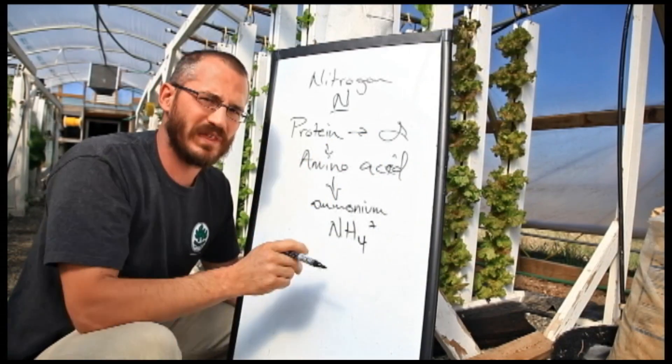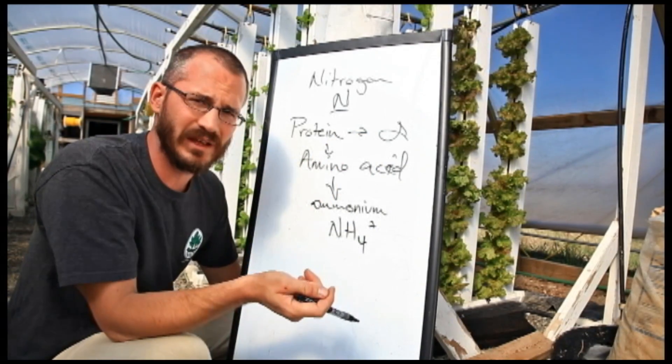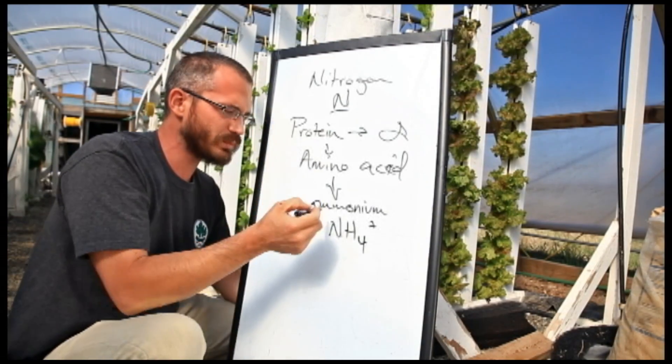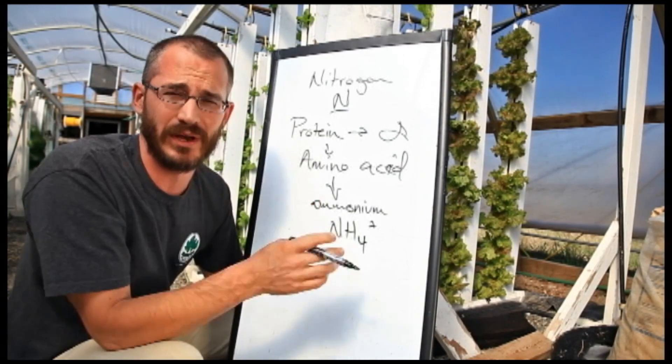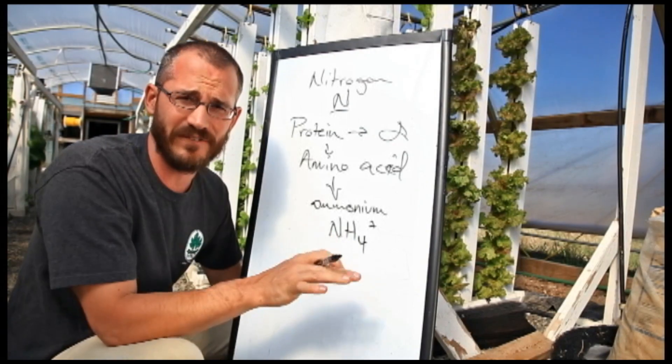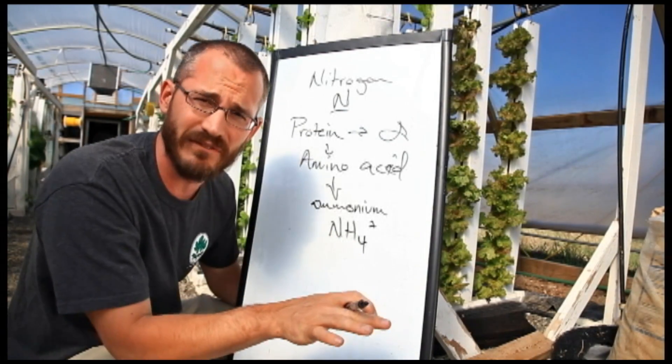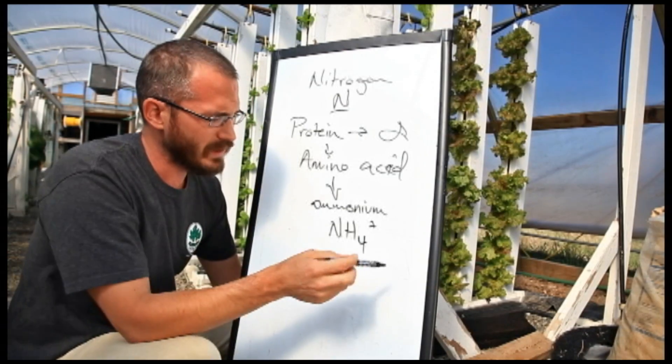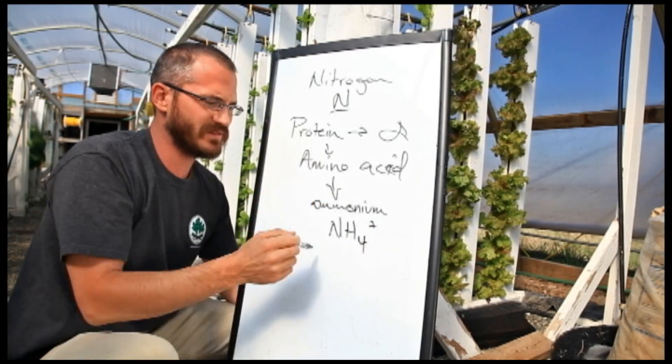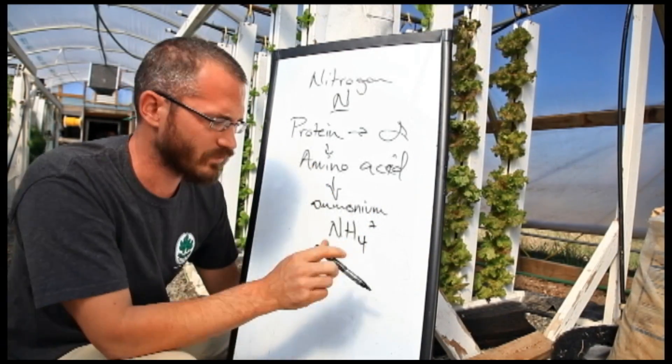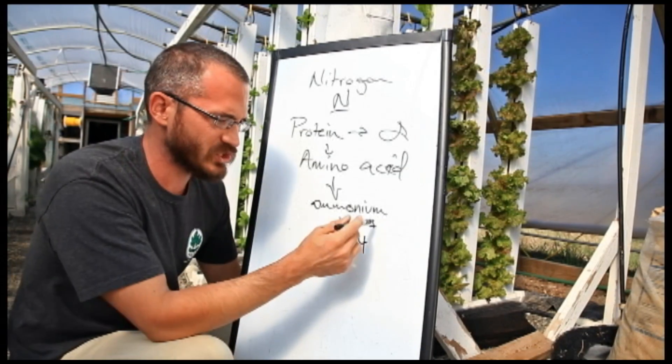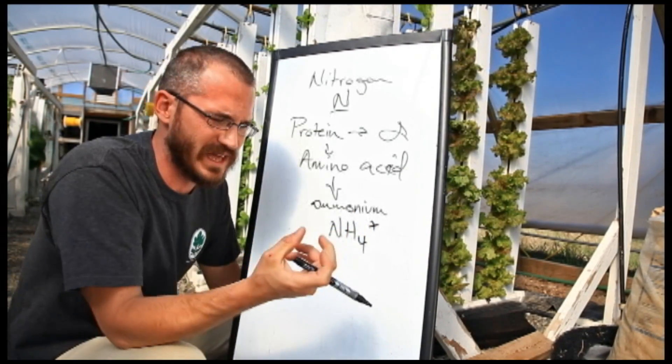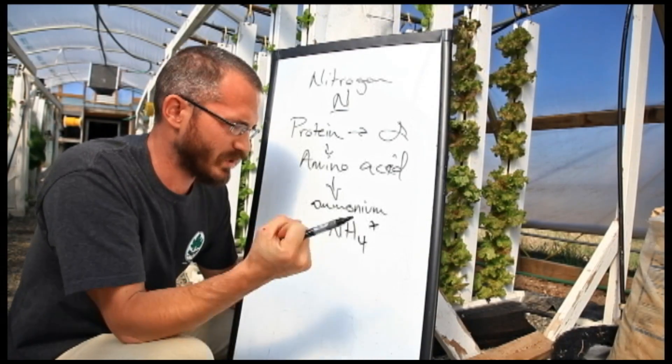This happens even without the fish. If there's extra feed in the water, that feed is being broken down by microbes in your system to produce ammonium or ammonia, depending on the pH of your water. Check out the ammonium-ammonia video that we have—we'll put a link at the end. It explains the difference between ammonia and ammonium. Ammonium is NH4+ and it has a charge. This is a polar molecule, like a magnet.